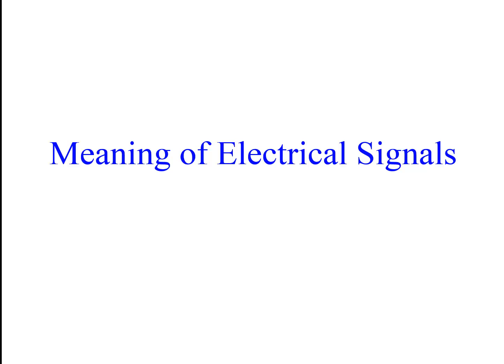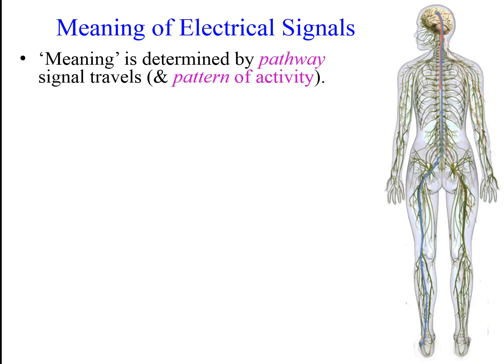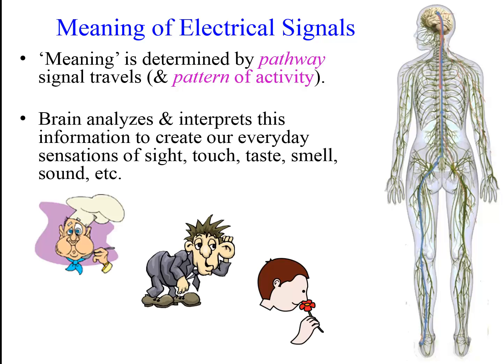There's one final point to consider about signaling in the nervous system. The nervous system uses the same types of signals to convey information about sight, sound, taste, smell, etc. So how does it know if a neural signal, like an action potential, means there's a visual stimulus or a sound stimulus? The meaning of information conveyed by neural signals is determined by the pathway or neural circuit that the information travels, as well as the patterns of activity. Thus, if signals originate in the muscle spindle, the nervous system knows the signals relate to how much the muscle was stretched. If signals originate in the olfactory receptors, the nervous system knows they relate to the type and strength of odor. Our brain keeps track of where sensory information is coming from to appropriately create our everyday sensations of sight, touch, taste, smell, and sound.